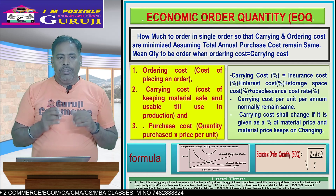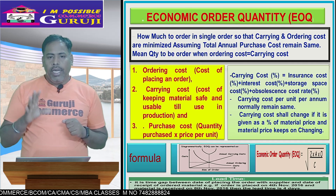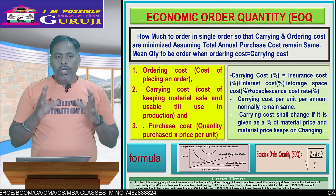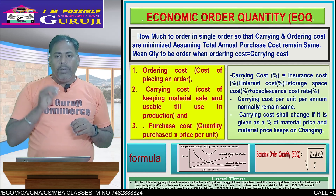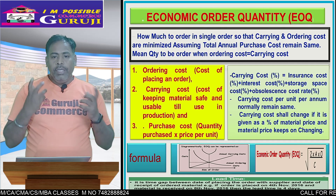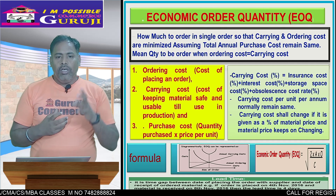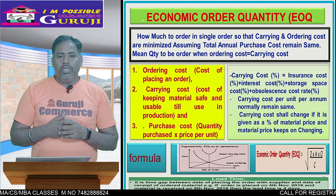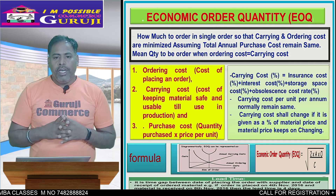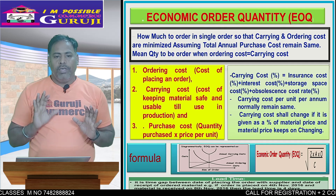Two components of EOQ are the ordering cost and carrying cost. Ordering cost is the cost per order, and carrying cost is inventory cost. Inventory cost is per annum, and the EOQ formula is the square root of 2CO divided by i.